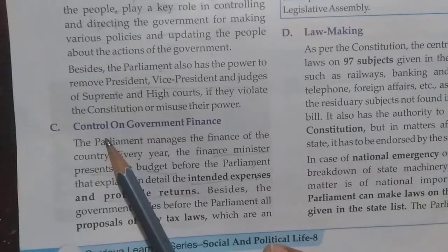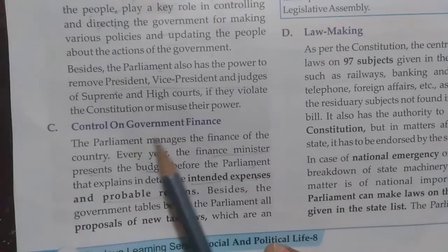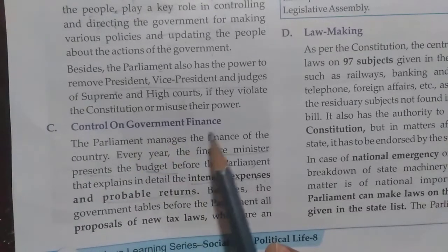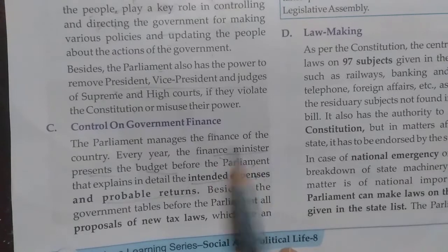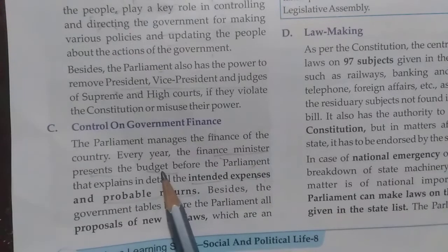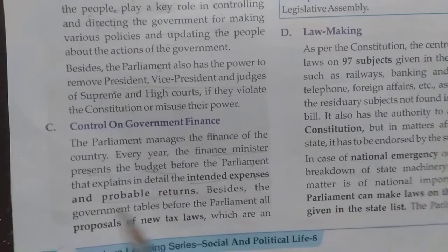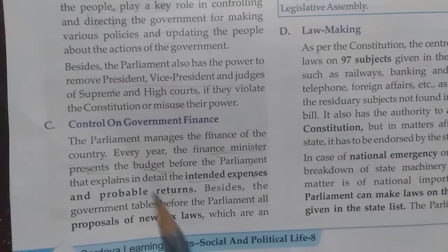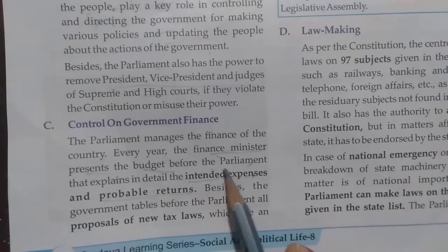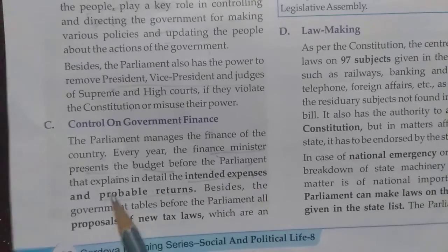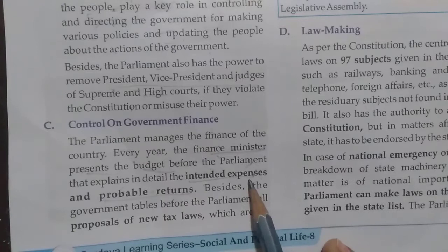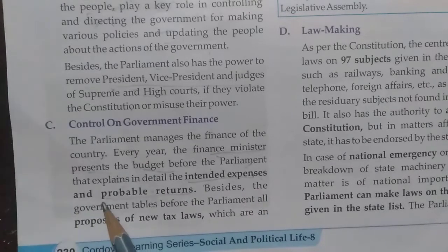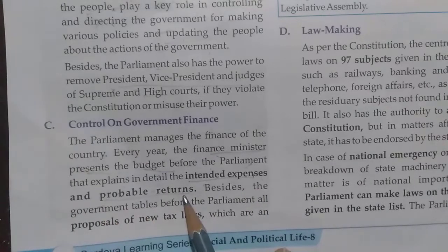Part C: Control on Government Finance. Every year, the Finance Minister presents a budget — detailing how much money India has — before Parliament, explaining in detail the intended expenses and probable returns.